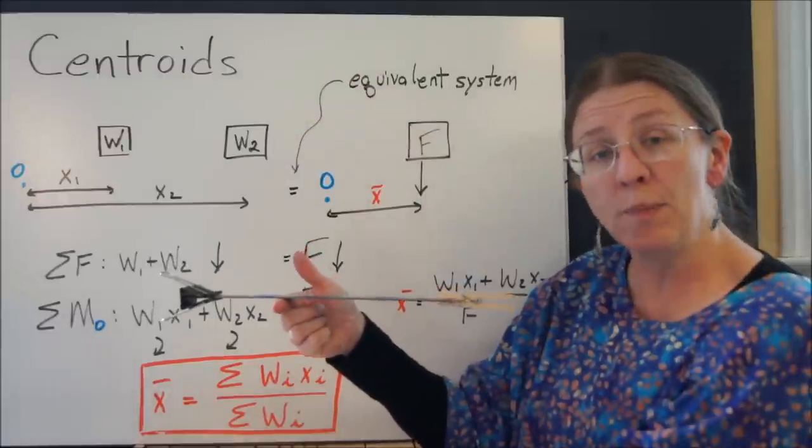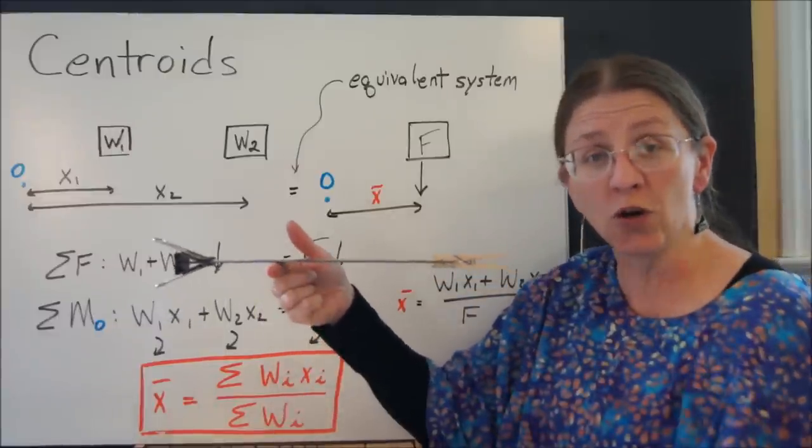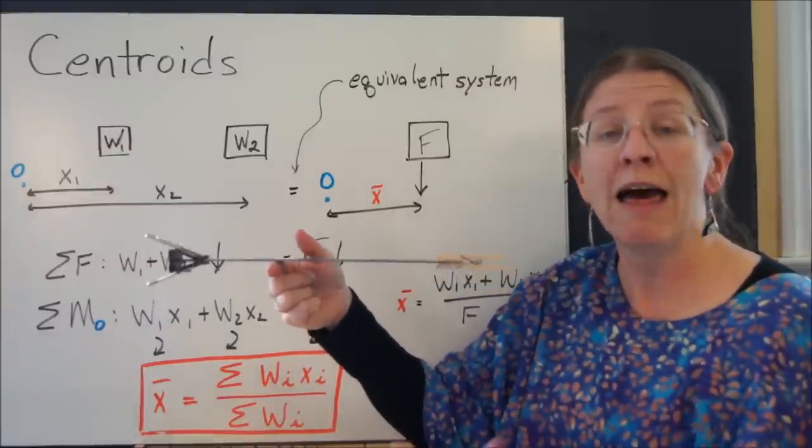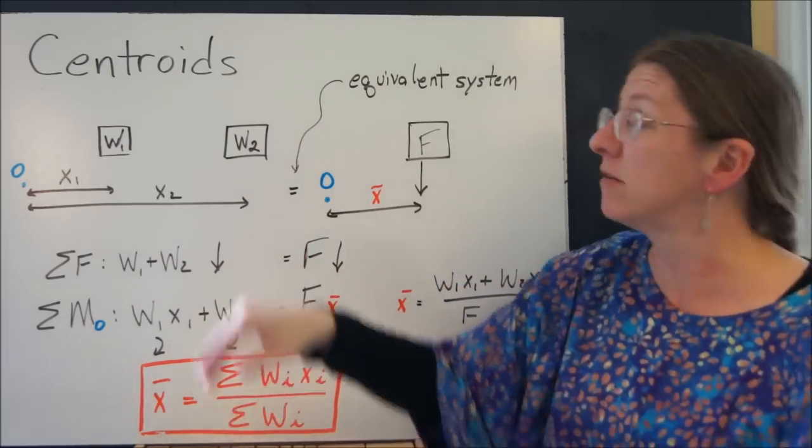Where does the equivalent point force down have to act so that my normal force from my finger is acting in the same spot? That's what a centroid is. It's balancing the tendencies on the moments on either side.